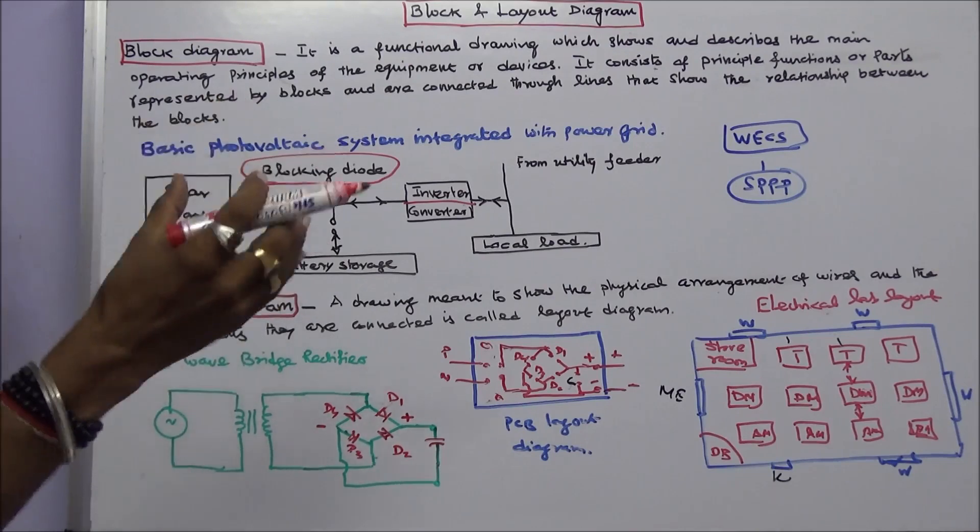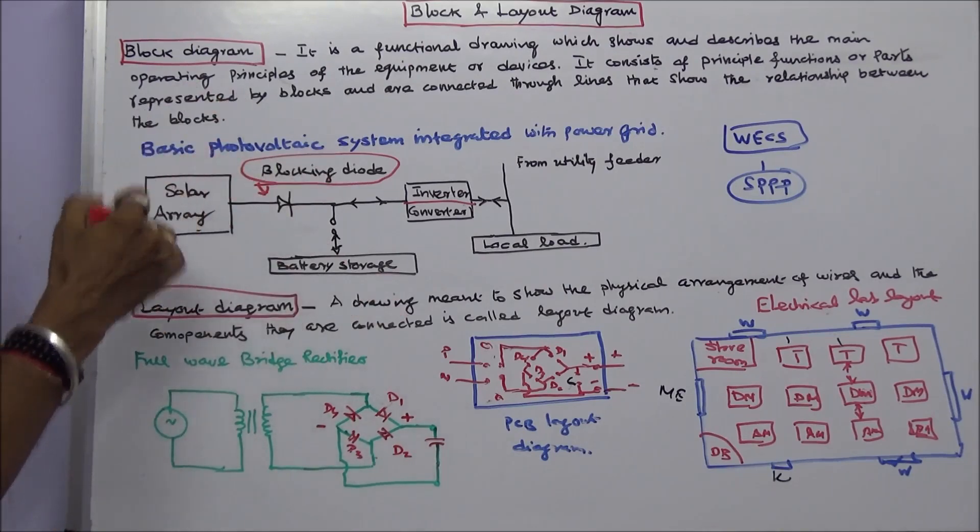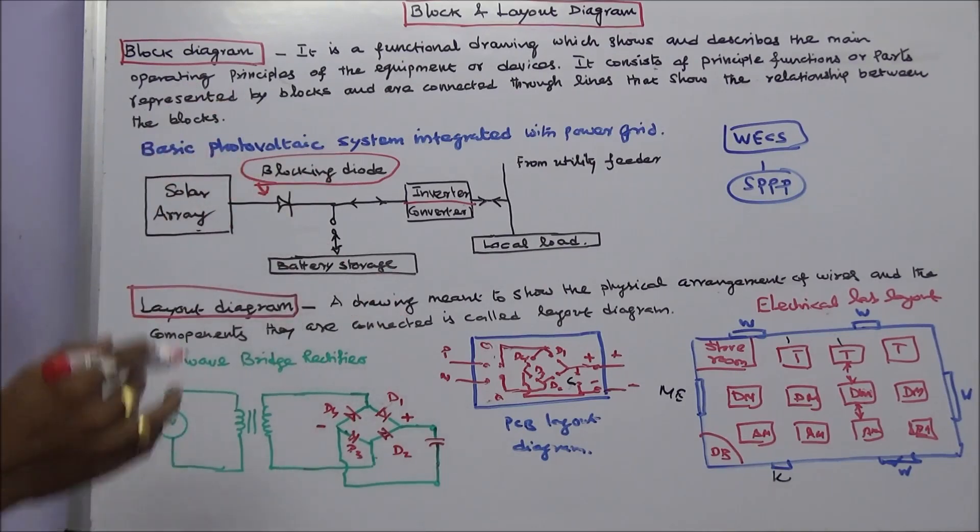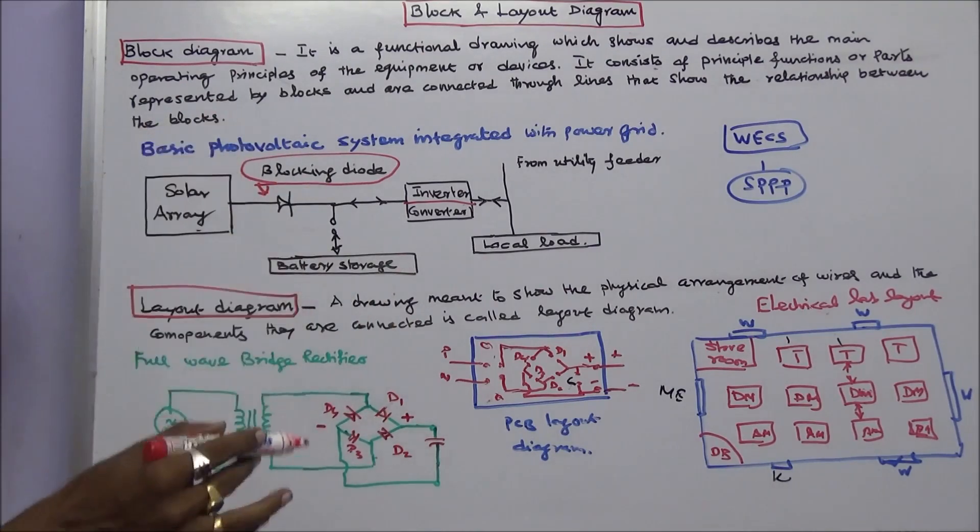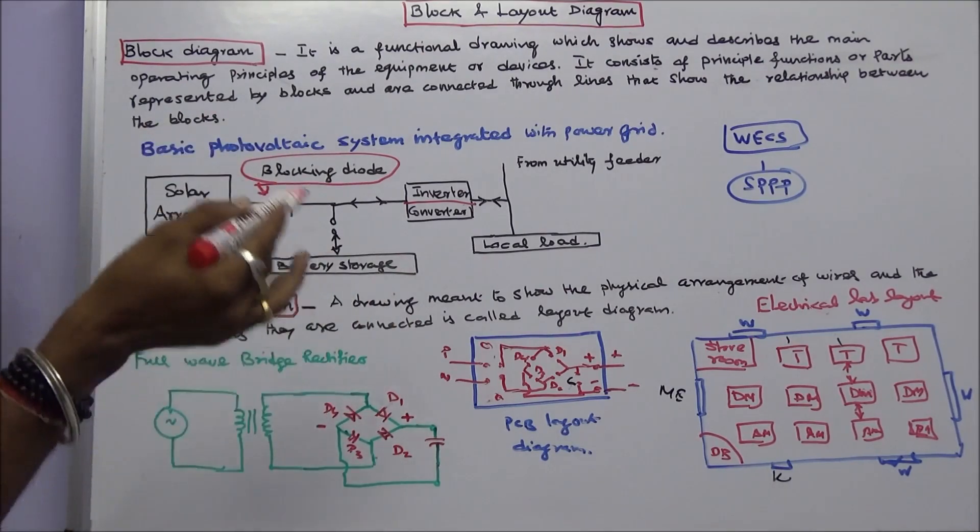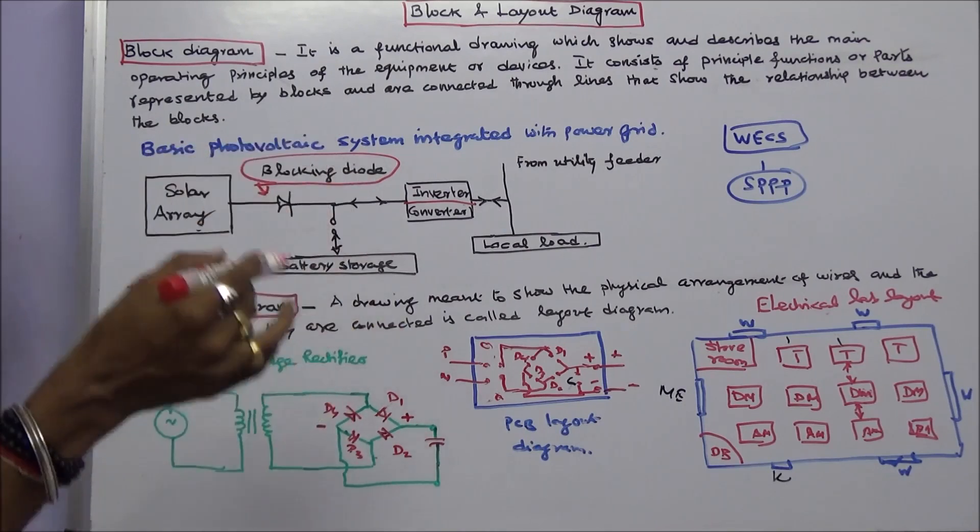Solar array is nothing but a group of solar cells connected together, called a solar array. There is a difference between model and module. Module is a group of components connected for a specific purpose, like an SCR module.